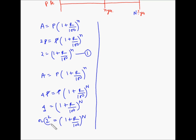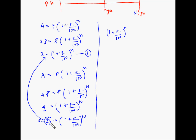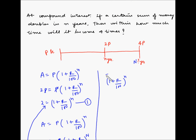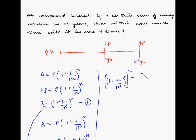Now, this 2 can be replaced using our first equation, where 2 = (1 + r/100)^n. Substituting into the second equation: [(1 + r/100)^n]² = (1 + r/100)^N. Applying the power rule, (1 + r/100)^(n×2) = (1 + r/100)^N.